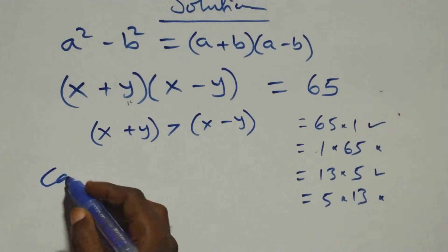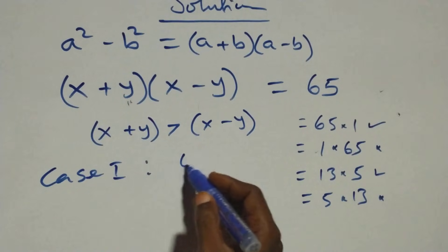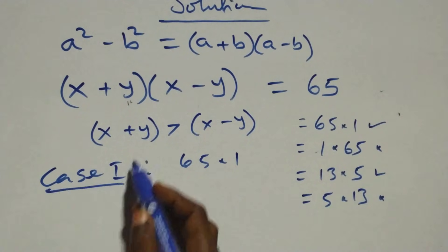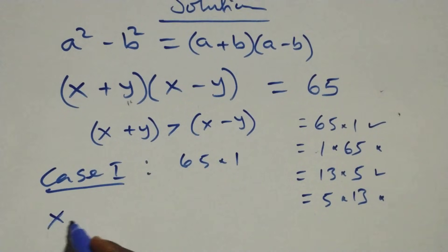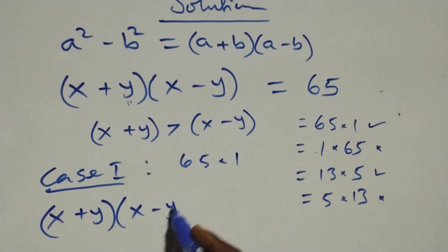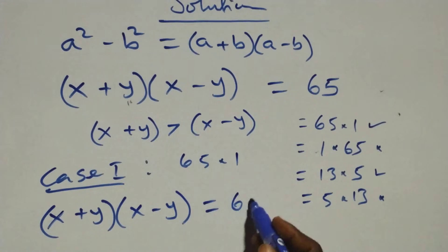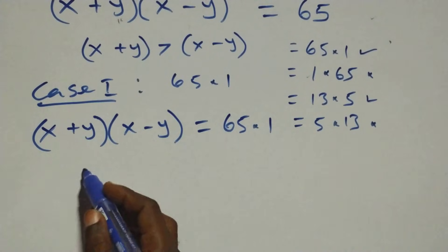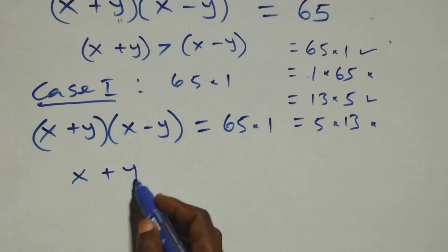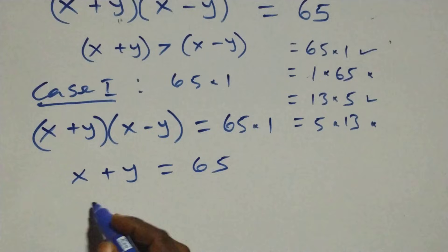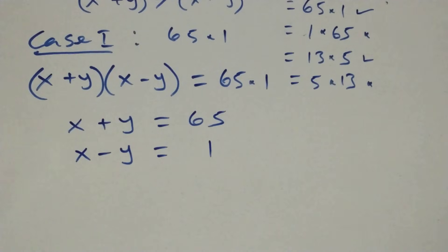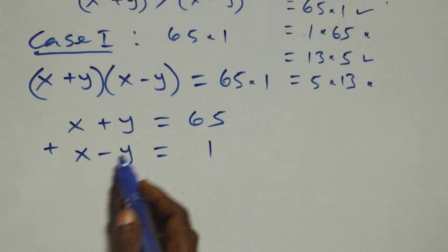Consider Case 1: 65 times 1. The equation (x+y)(x-y) equals 65 times 1, so the first bracket x plus y equals 65 and the second bracket x minus y equals 1. We then solve these two equations simultaneously.